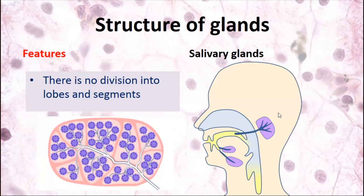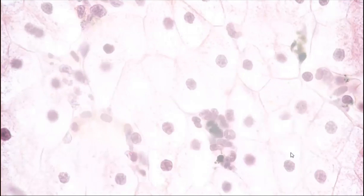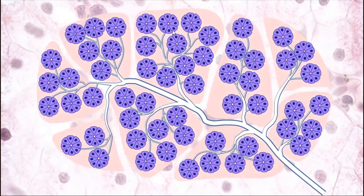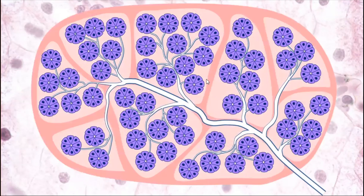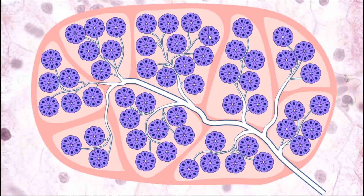Now let's look at the inner structure of the glands. We already know there is stroma and parenchyma. Stroma is capsule, septa, and interstitial connective tissue inside the lobules. Parenchyma contains secretory units and excretory ducts. Differences are mainly in the parenchyma, and they begin from the cells. Cells generally may be divided into serous and mucous — serocytes and mucocytes.